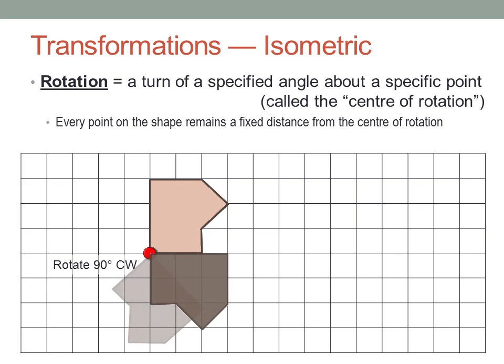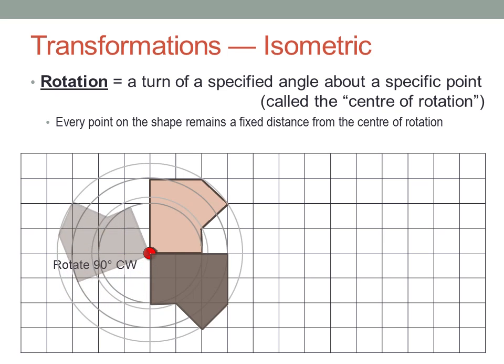Did you notice, as we rotated it, that each part of the shape moved in a circle around the centre of rotation? Every point in the image is the same distance from the centre as it was in the object.